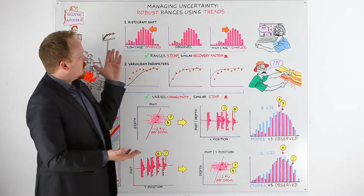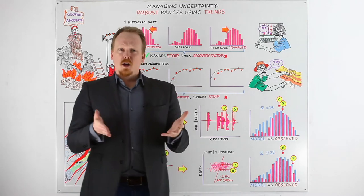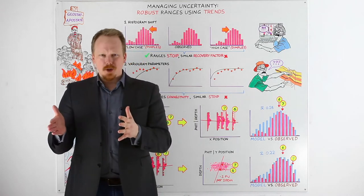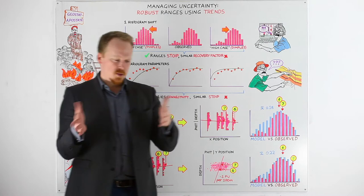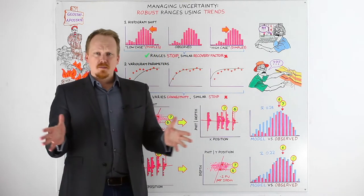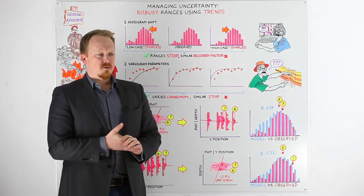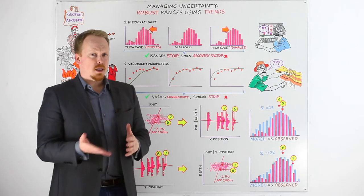I started by thinking about shifting histograms. I think a lot of us do this. If we wanted to get a low case then what if the data was worse than what we observed, or a high case we could shift it upwards in the other direction. I've done this many times before in the early parts of my career. It's not a particularly valid way of doing it in many examples.